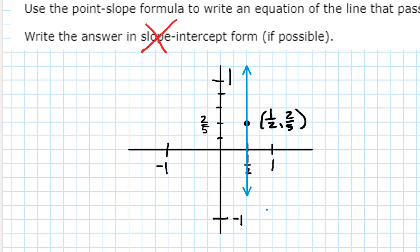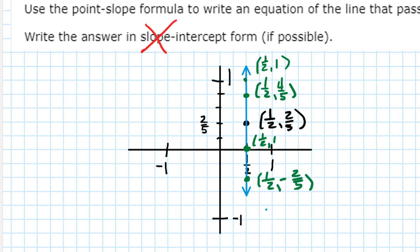Well, this point, for example, would be one-half four-fifths. This point would be one-half one. This point down here would be one-half negative two-fifths. This point right here would be one-half zero.